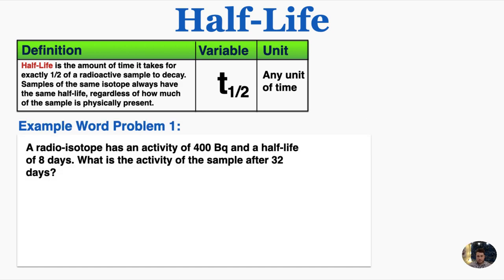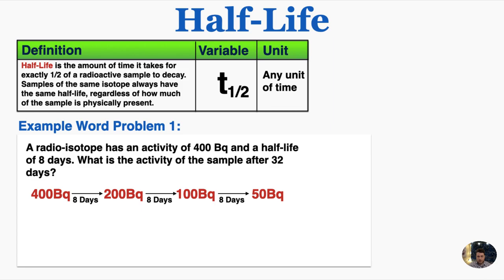I'll finish with a few word problems and a graph problem. A radioisotope has an activity of 400 Bq and a half-life of eight days. What is the activity of the sample after 32 days? I don't need to use that complicated equation. I can just say we start with 400, and after one half-life we're at 200, then 100, then 50, then 25. So at this point 32 days in total have passed, so my answer is 25 Bq. Four half-lives have passed.